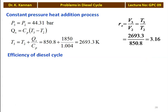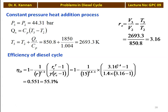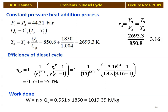We calculate the efficiency of the cycle using the Diesel cycle efficiency equation: eta equals 1 minus (1 by R to the power gamma minus 1) into (Rc to the power gamma minus 1) divided by (gamma into Rc minus 1). Substituting: 1 minus (1 by 15 to the power 0.4) into (3.16 to the power 1.4 minus 1) divided by (1.4 into 2.16) equals 0.551, which is 55.1%. Work done W equals efficiency into Qs: 0.551 into 1850 equals 1019.35 kilojoules per kilogram.